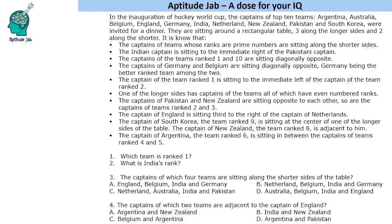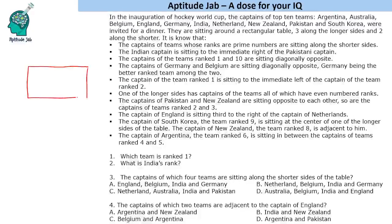Hello everyone, welcome to Aptitude Jab. This is a question on seating arrangement. It says that there are captains of 10 teams — 10 hockey teams — and their captains sat around a rectangular table, 3 along the longer sides and 2 along the shorter sides. Certain conditions are given to us about who is sitting where.